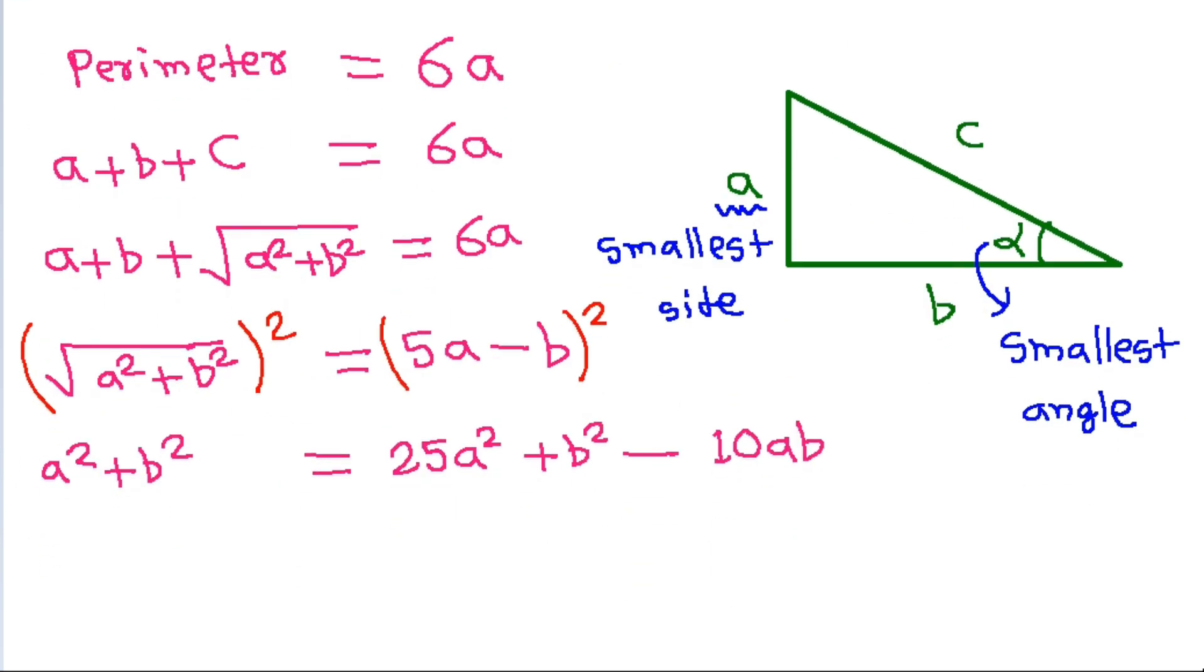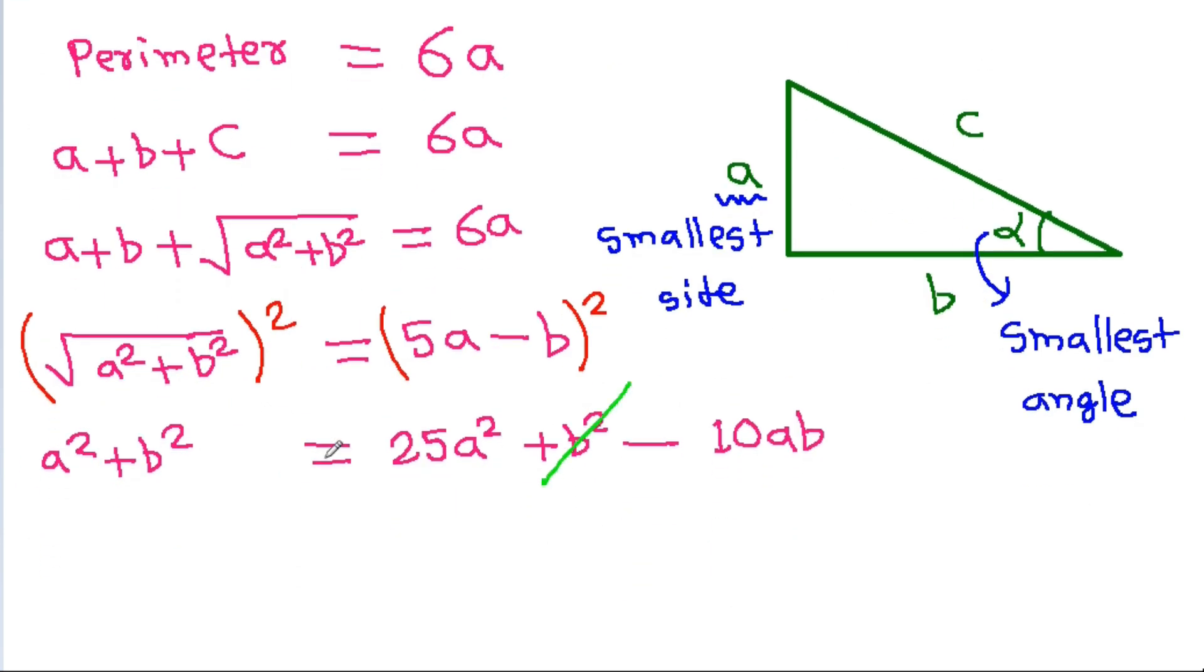The b² terms cancel, giving 10ab = 25a² - a² = 24a². One a cancels, and we get a/b = 10/24.